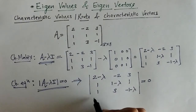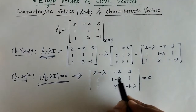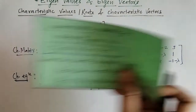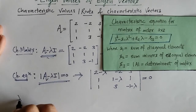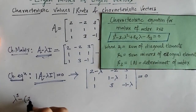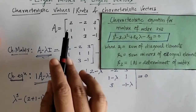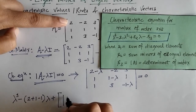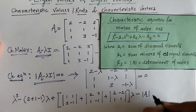This determinant can be solved by expanding along any row or column to get the characteristic equation. However, we will use a standard result: the characteristic equation is given by lambda cubed minus S1 times lambda squared plus S2 times lambda minus S3 equals zero, where S1 is the sum of diagonal elements, S2 is the sum of minors of diagonal elements, and S3 is the determinant of the given matrix.